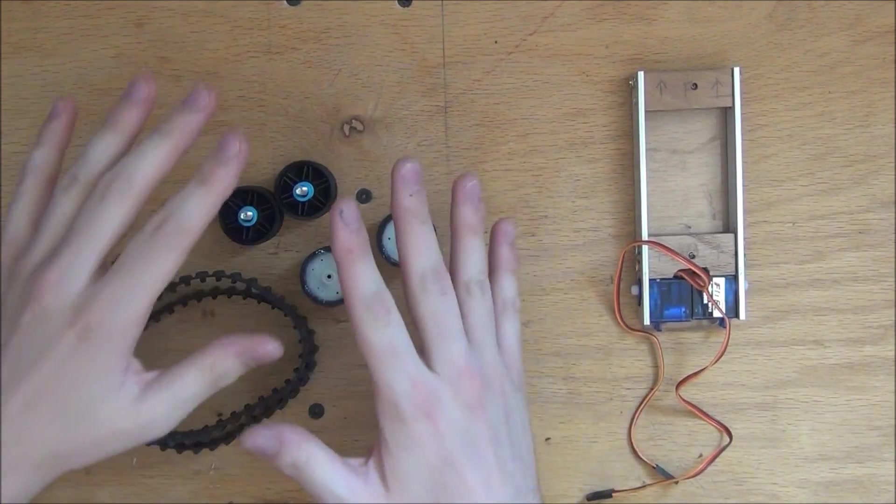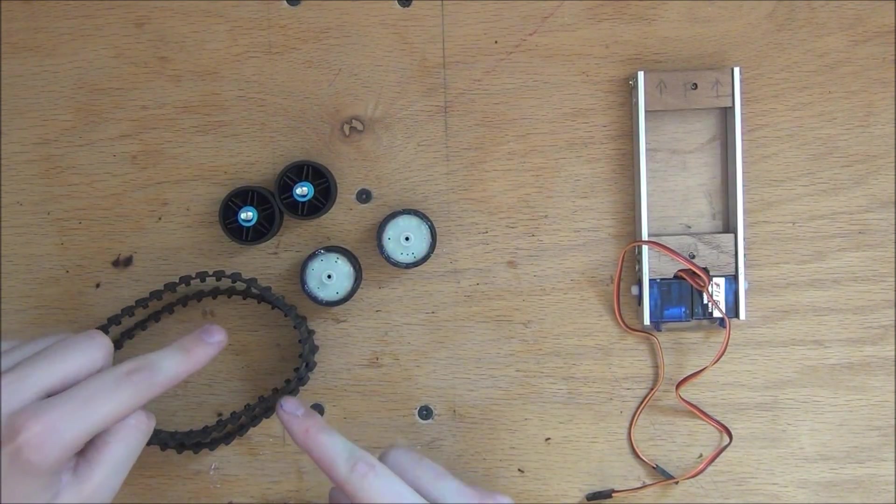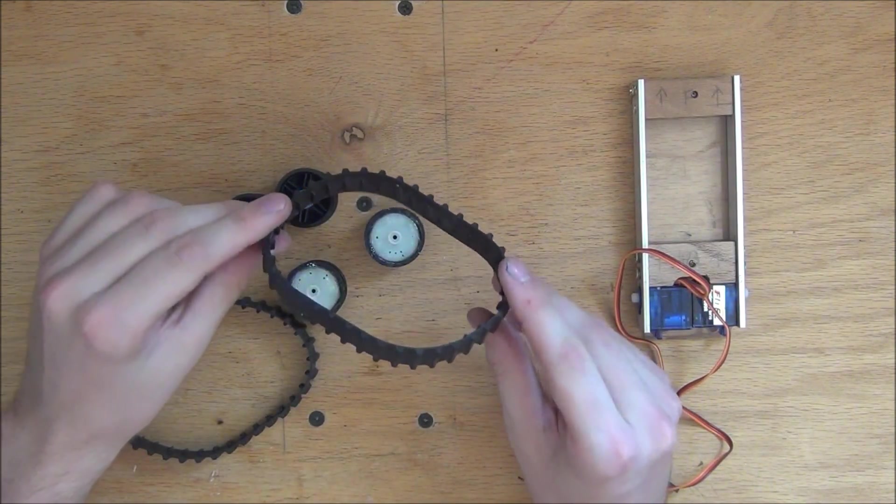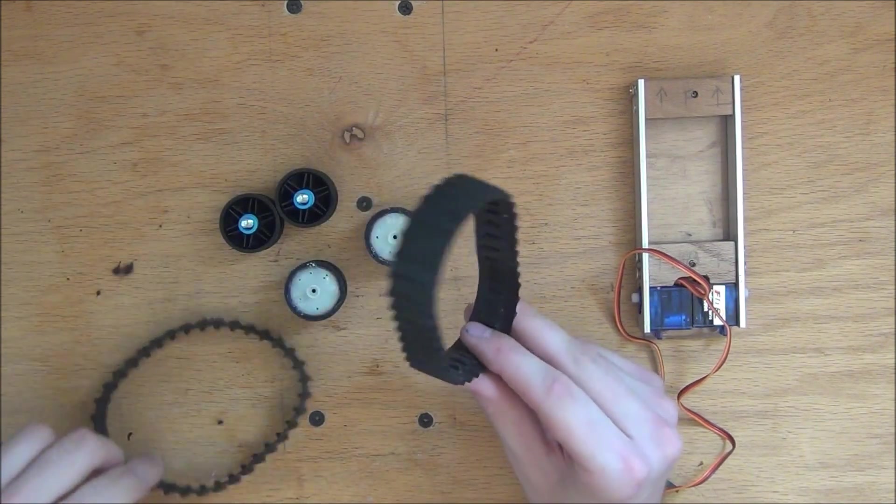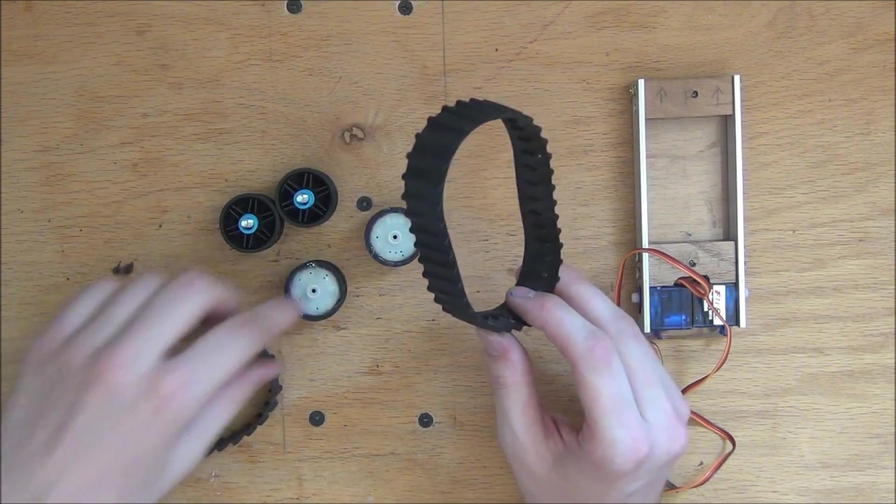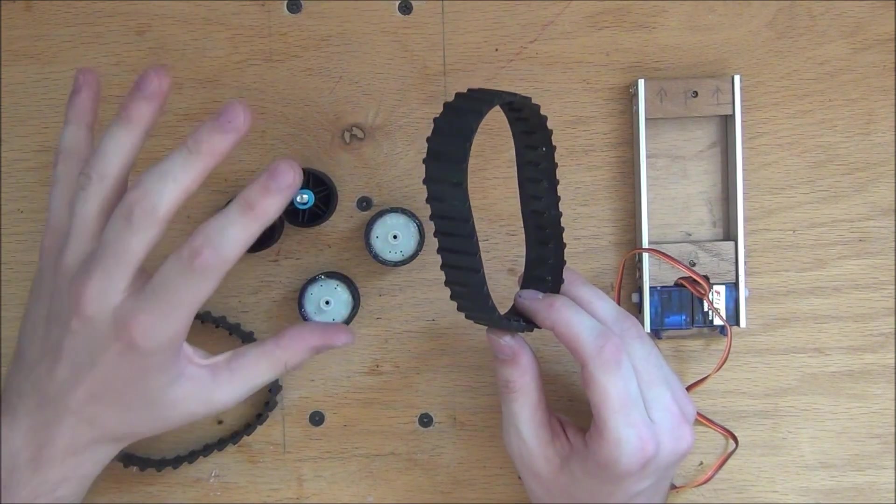So next we can move on to the tank treads. The tank treads I'm using are actually Lego treads. I bought these off eBay. It came with two tank treads and then six track wheels. The whole set cost probably about eight bucks.